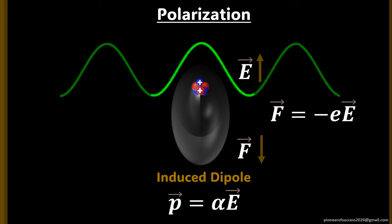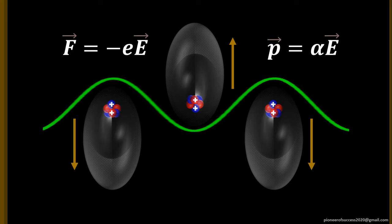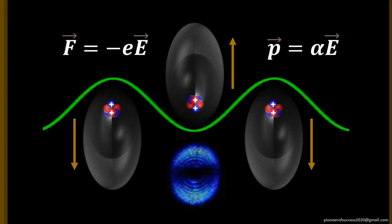The direction of the polarization of the molecule is decided by the direction of the electric field. Thus, with an oscillating electric field, the oscillation causes a continuous change in the direction of the polarization of the molecule, causing the electron cloud to oscillate in the same tune as that of the oscillating electric field.